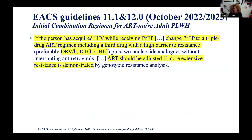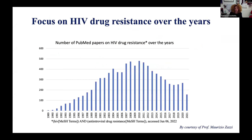A new recommendation in the European guidelines addresses PrEP failure: it is very important to change PrEP to a triple-drug ART regimen including a third drug with a high barrier to resistance. The recommendation is to start and then, according to the resistance test results, adjust the treatment accordingly.